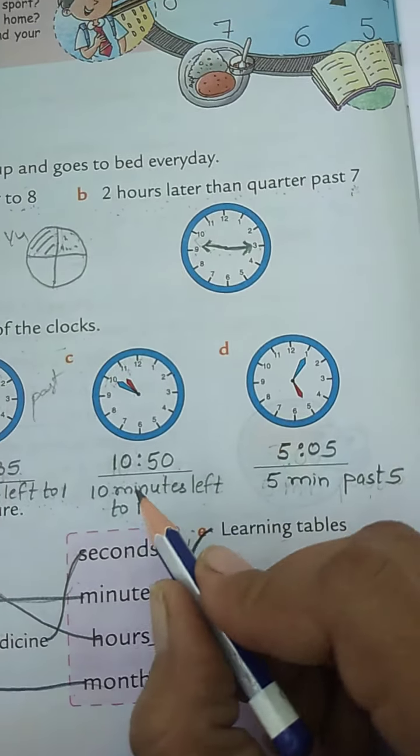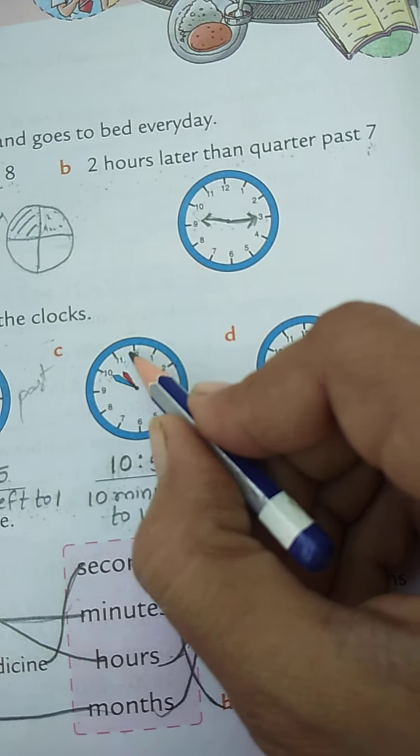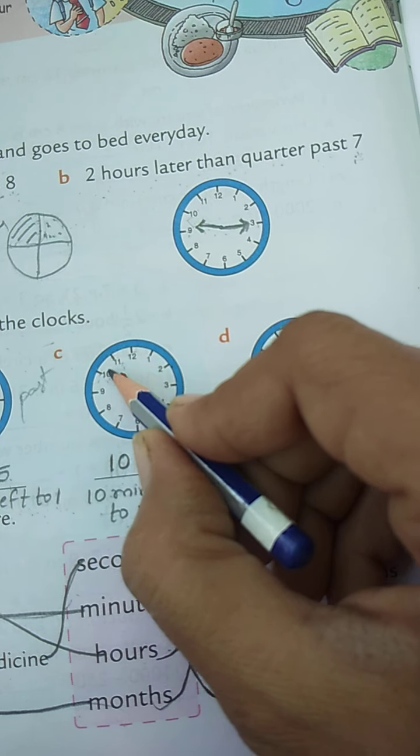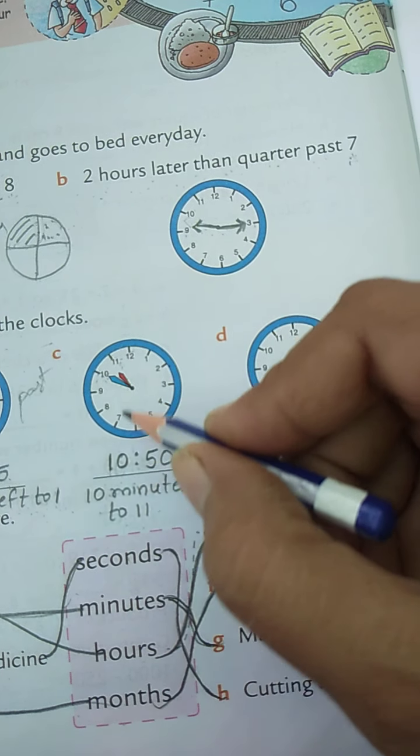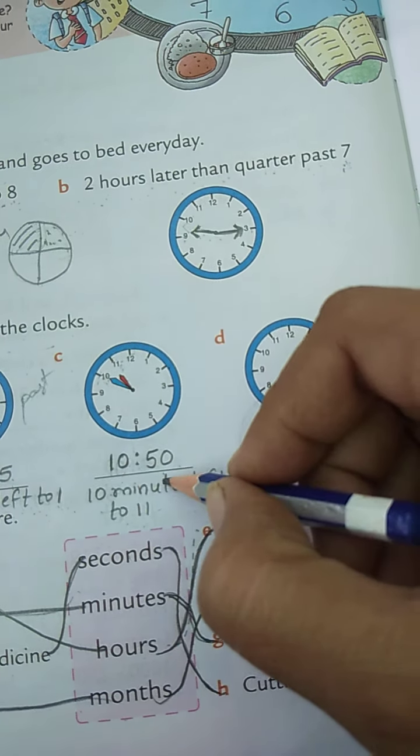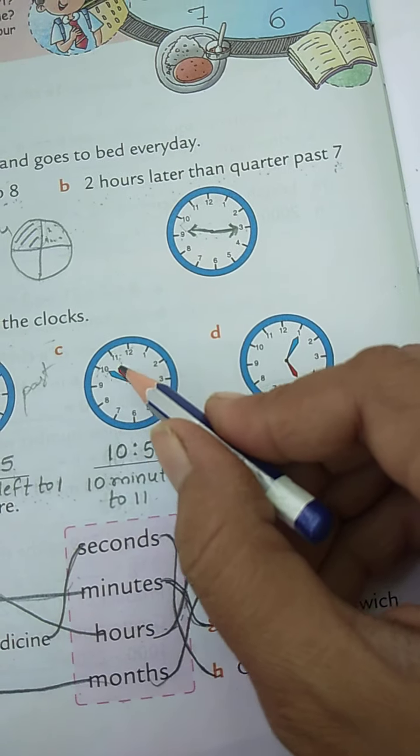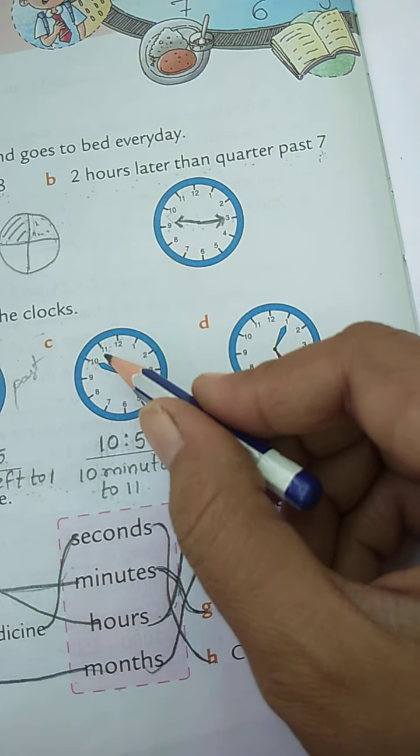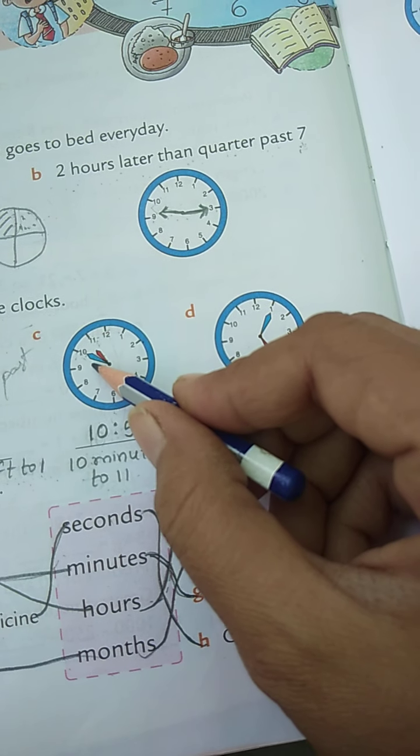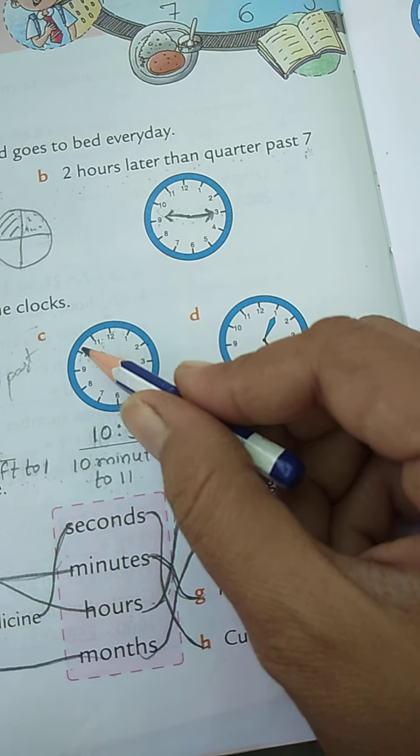Now number C: again, small hand is between 10 and 11. The smaller number is 10, before number is 10, so it is 10. And big hand is on 10. 10 times 5 is 50.